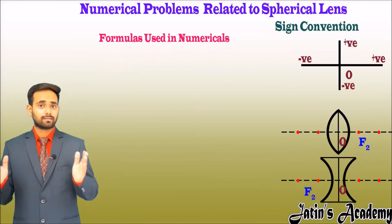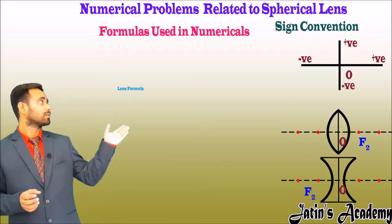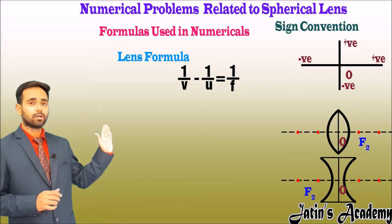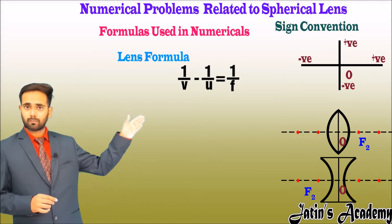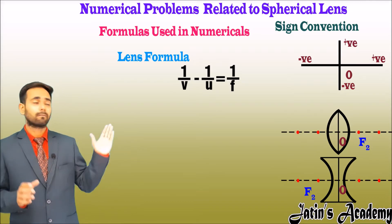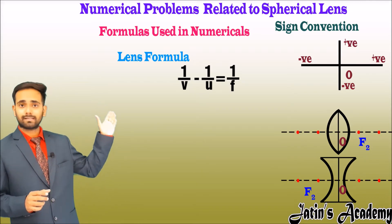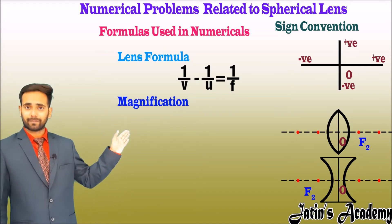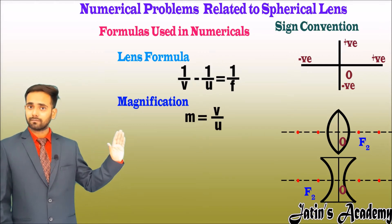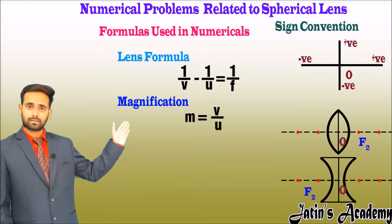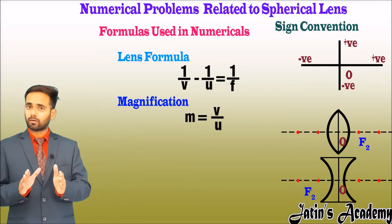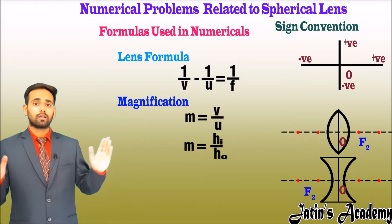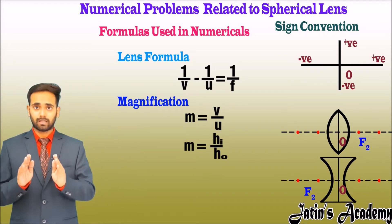The lens formula is: 1/v − 1/u = 1/f. This is similar to the mirror formula, but here it is minus instead of plus. For magnification using lens, m = +v/u (note: for mirrors it is −v/u). The standard formula for magnification also remains m = h_i / h_naught.